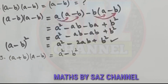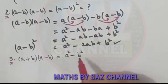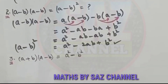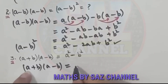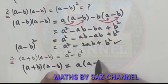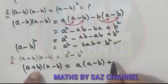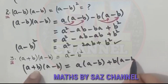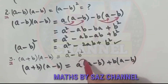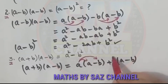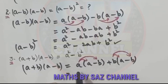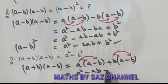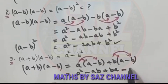Coming to the third identity: (a + b)(a - b) = a² - b². How does this come? We take (a + b)(a - b) — I will take a and multiply it with the whole of the second bracket, then take b and multiply it with the whole of the second bracket, applying the distributive property. This gives a² - ab + ba - b².